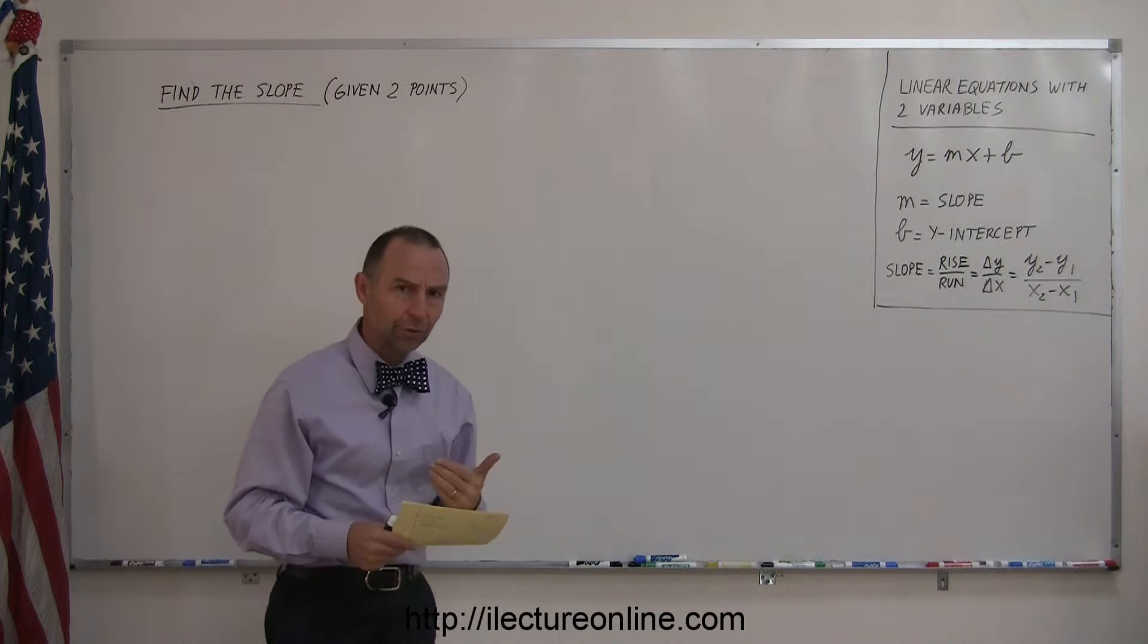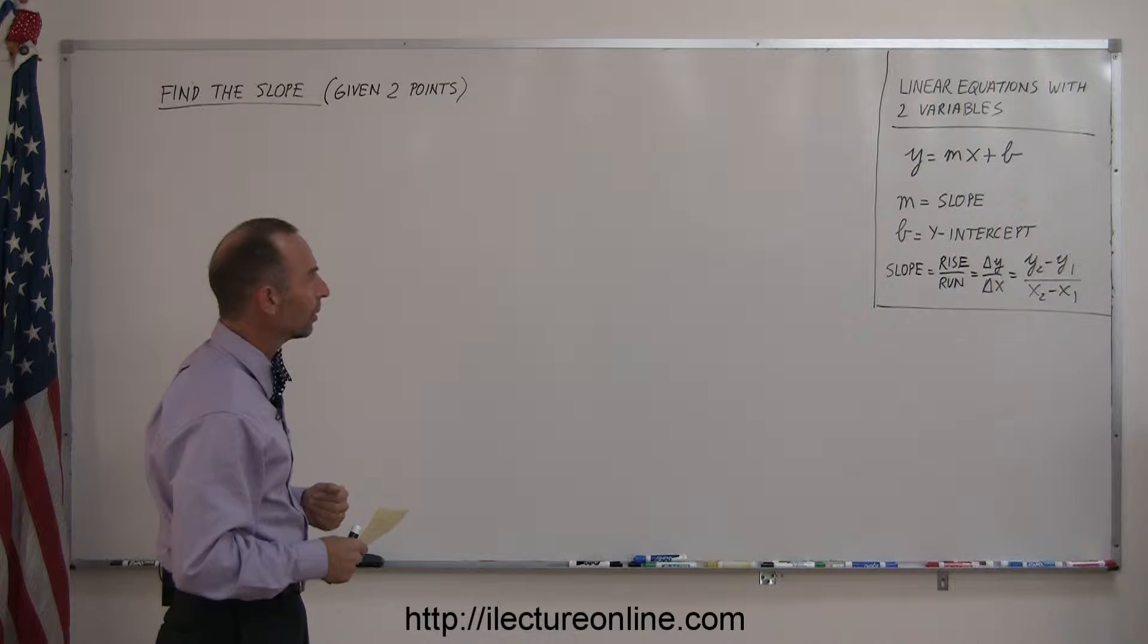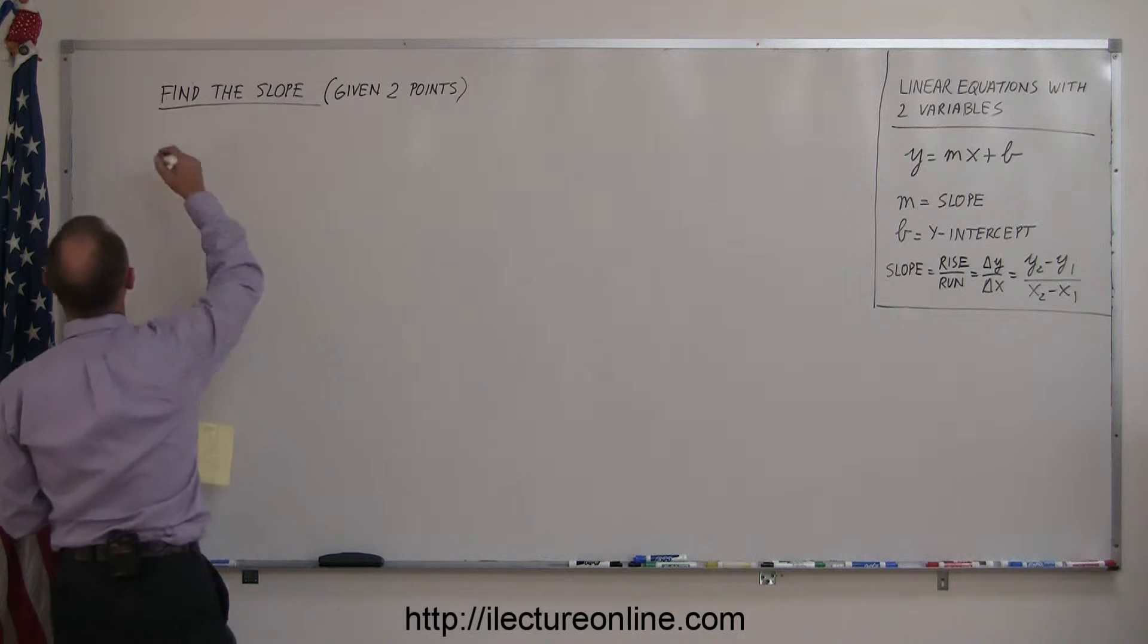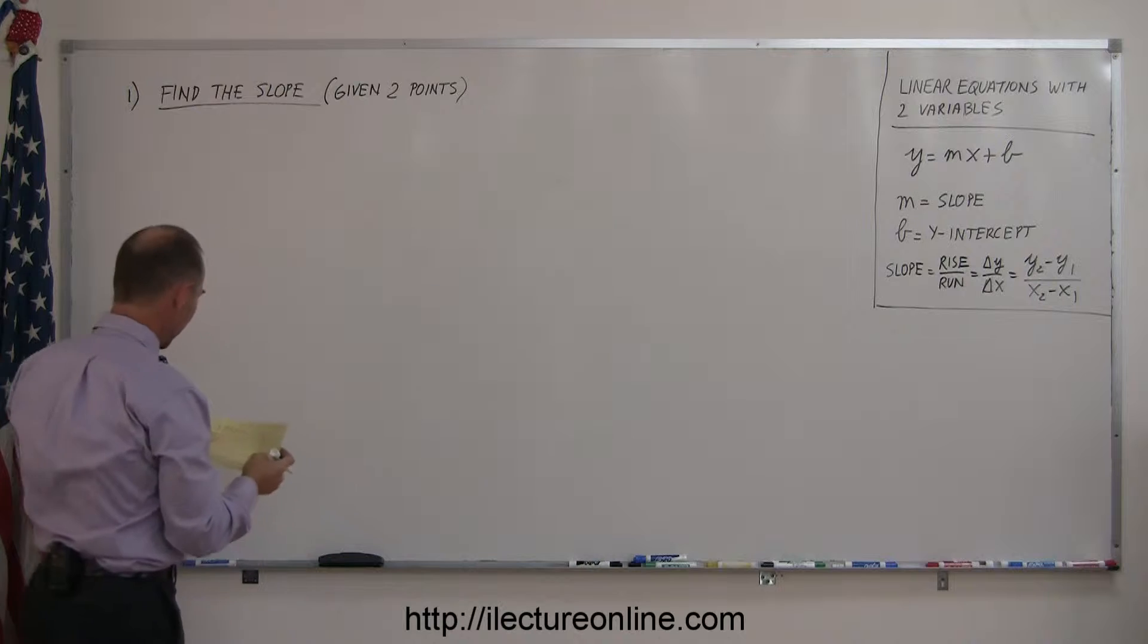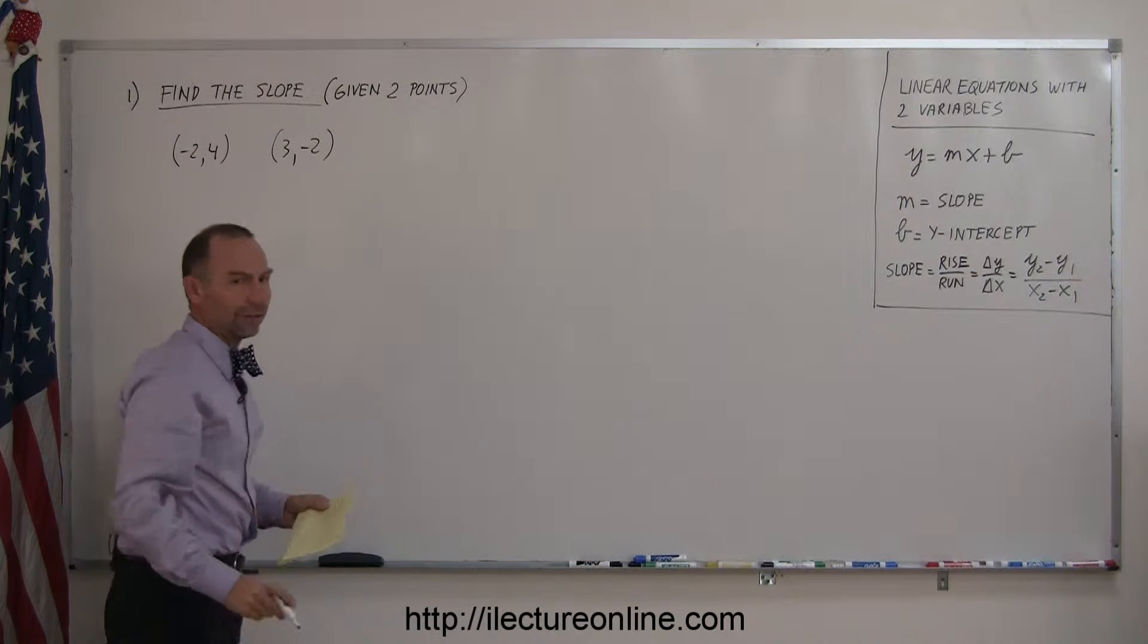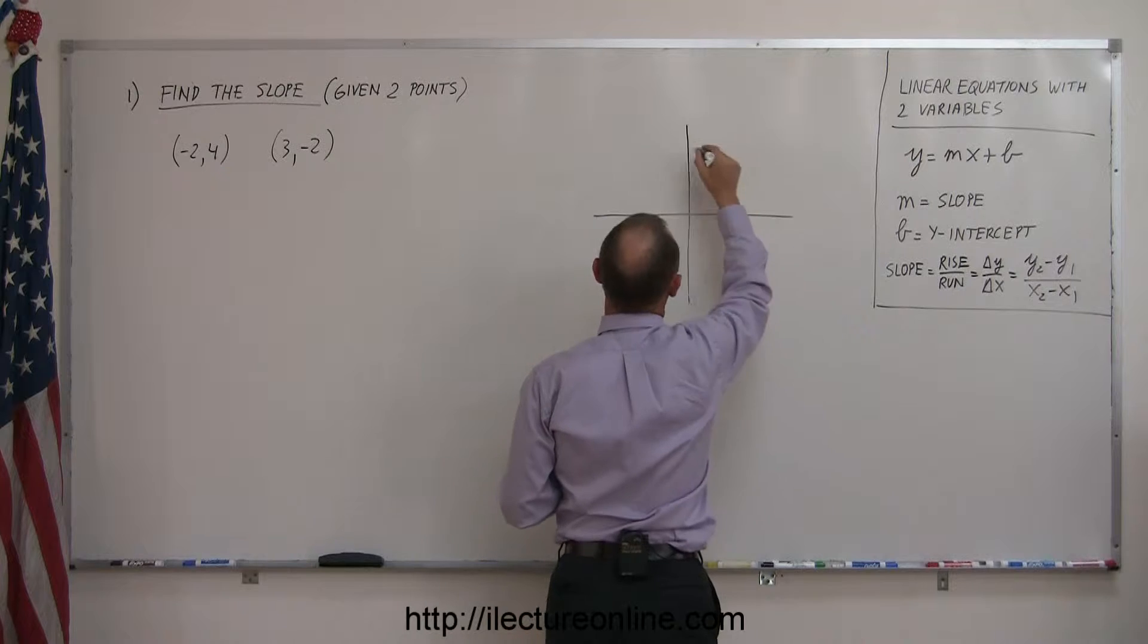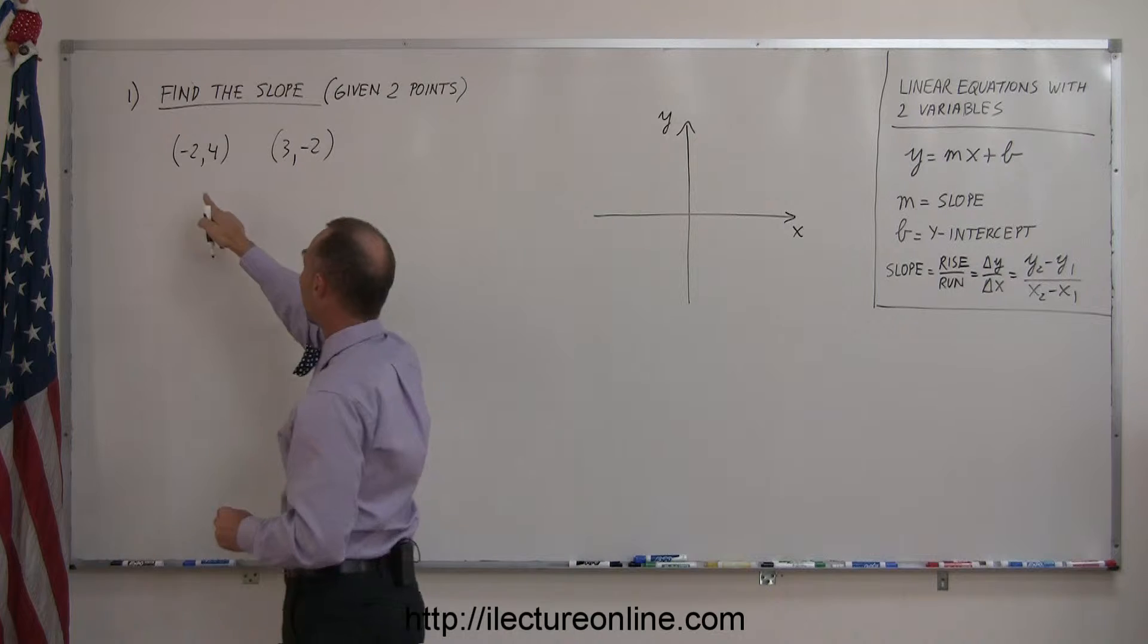So we're going to go through systematically a number of different types of problems you'll run into, dealing with linear equations with two variables. And let's start with finding the slope given two points. So points usually are indicated with an x and a y value. So if I have the points minus two comma four and another point three and minus two. Well first of all let's graph those on the Cartesian coordinate system. So we have the vertical axis which represents y, the horizontal axis which represents x. Let's place those points on there.